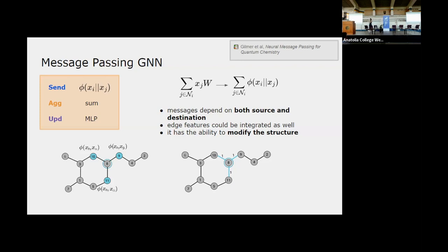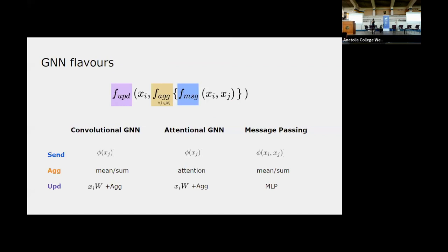Both GCN and GAT sum the representations of neighboring nodes — one with attention, one with a simple sum. The third flavor is the message passing neural network (MPNN), which improves on both by having the message function take into account both the source and destination nodes, rather than projecting only the source node. Otherwise, it follows the same framework. These three architectures — GCN, GAT, and MPNN — are the ones most commonly used in application papers.